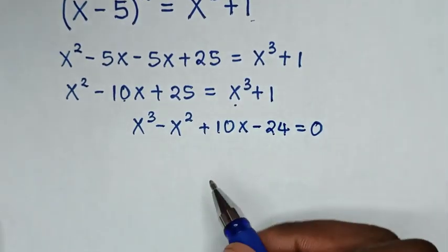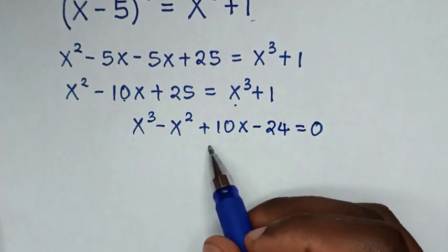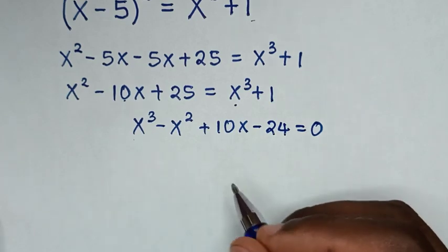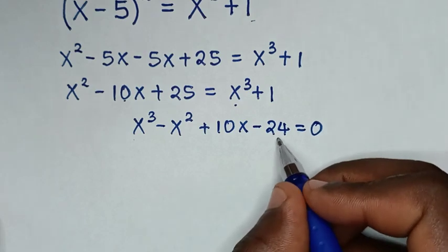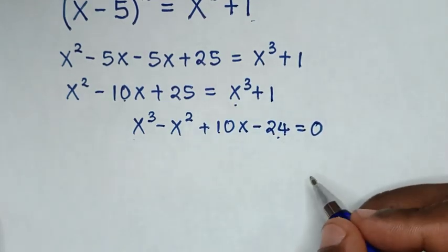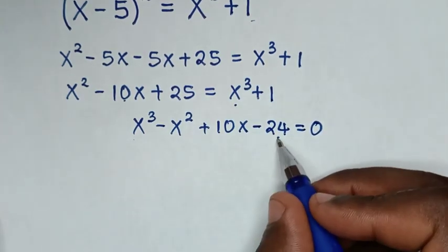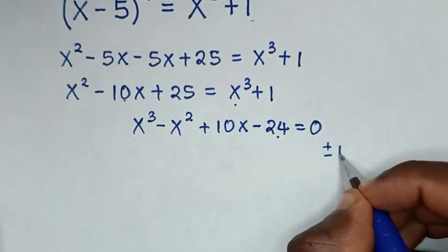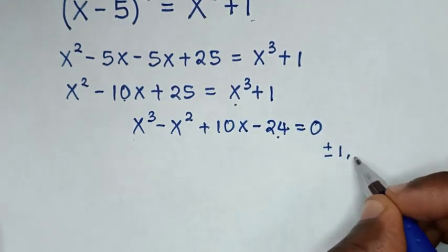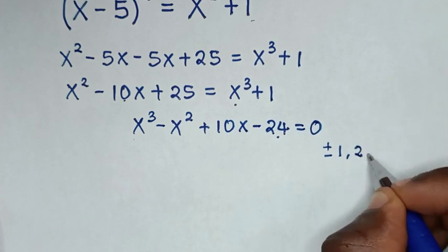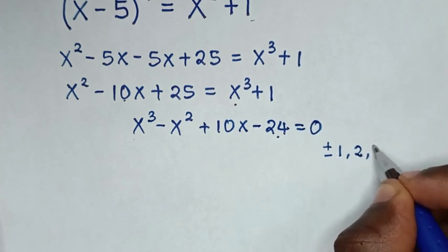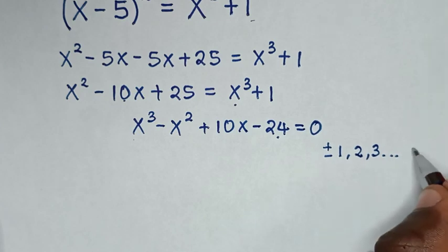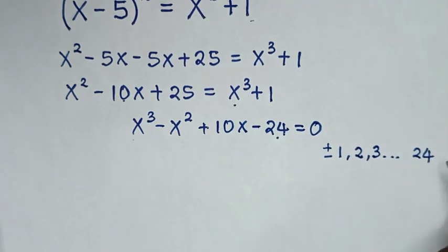Now from this cubic equation we will solve it by grouping and factorization. From the factors of negative 24 — the factors of negative 24 are many, starting with plus or minus 1, plus or minus 2, plus or minus 3, and so on up to plus or minus 24.